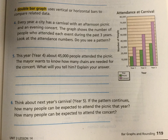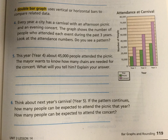All right, let's talk about these and see how you did. You should have answers down for four, five, and six. Number four says: every year a city has a carnival with an afternoon picnic and an evening concert. The graph shows the number of people who attended each event during the past three years. Look at the attendance numbers — do you see a pattern? For the green, picnic goes up each year, and so does concert. So we see a pattern that attendance increases each year for both picnics and concert.